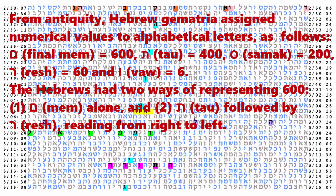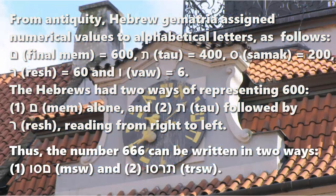From antiquity, Hebrew gematria assigned numerical values to alphabetical letters as follows: final Mem equals 600, Tau equals 400, Samech equals 200, Resh equals 60, and Vav equals 6. The Hebrews had two ways of representing 600: (1) Mem-final alone, and (2) Tau followed by Resh, reading from right to left. Thus, the number 666 can be written in two ways: (1) MShV and (2) TRShV.